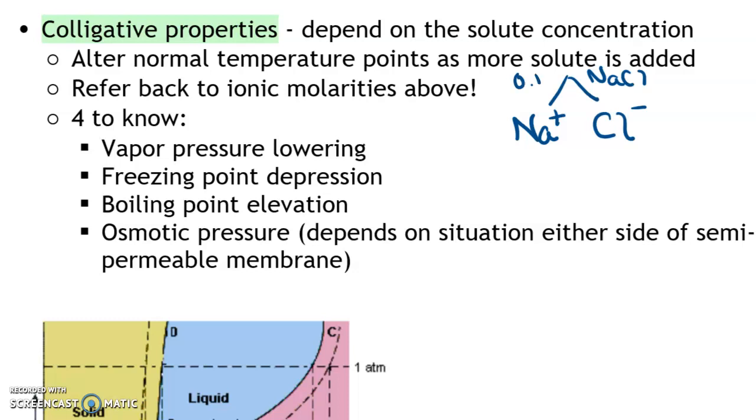So just as an example again, if we have a 0.1 molar NaCl solution, then that means we have 0.1 moles of sodium ions and also 0.1 moles of chloride ions. But if we're talking about the number of particles in that entire solution, we have two molar as our concentration.